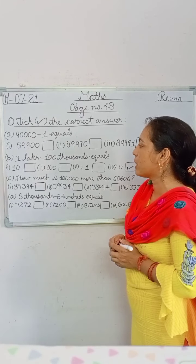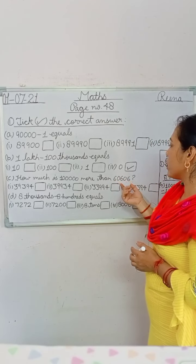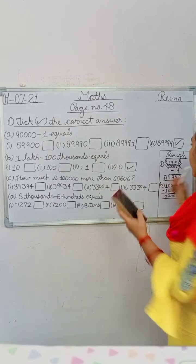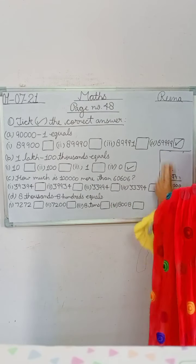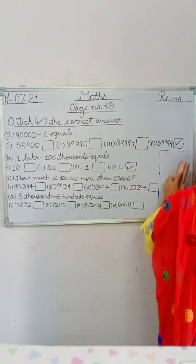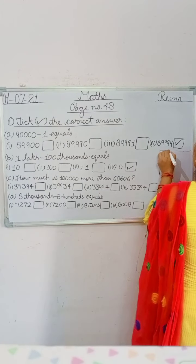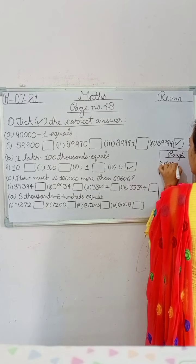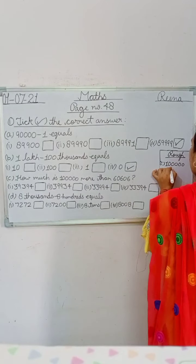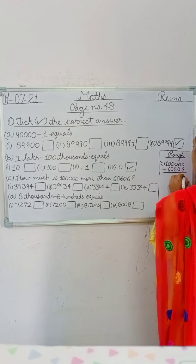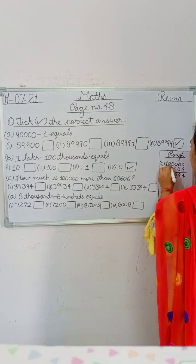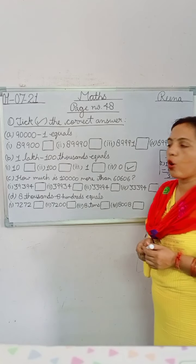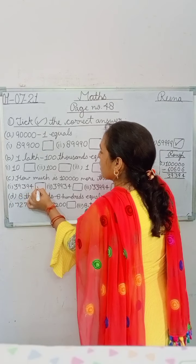In C part you have given: how much is one lakh more than sixty thousand six hundred six? Use your rough side and find the difference — write one lakh minus sixty thousand six hundred six. Ten minus six is four, nine minus six is three, nine minus six is three. So thirty-nine thousand three hundred ninety-four is the correct answer — option number one.